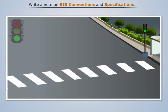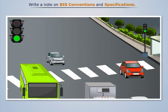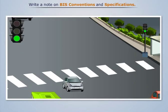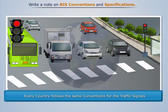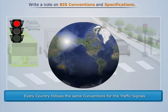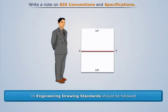We all are aware of the traffic signals in whichever part of the world. Green signal means go and red signal means stop. This is because every country follows the same convention for the traffic signals. In engineering drawing, there should be specific standards and conventions to be followed by all the engineers so that the drawing can be effectively used in any country.